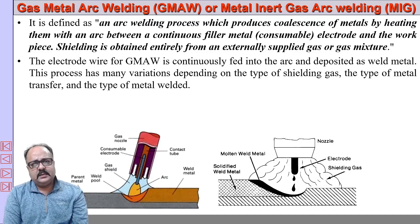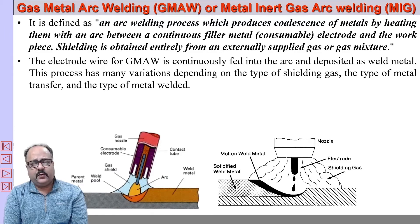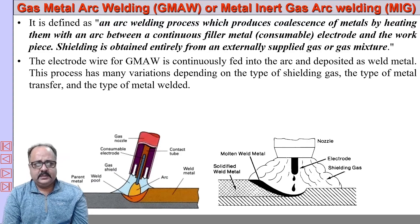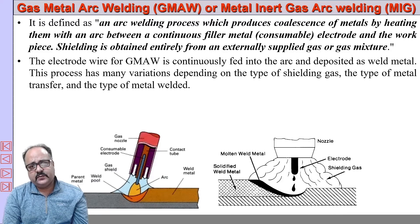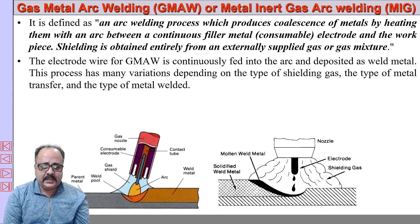The American Welding Society defines gas metal arc welding as an arc welding process which produces a coalescence of metals by heating them with an arc formed between a continuously fed, bare consumable electrode and the workpiece. The shielding is obtained by using a shielding gas, which may be an inert gas or a mixture of inert and active or reactive gas.